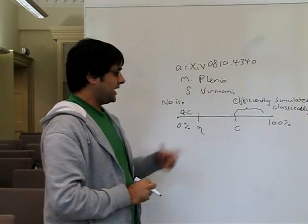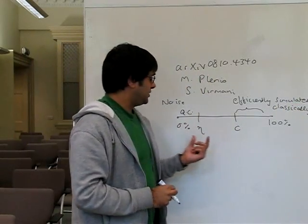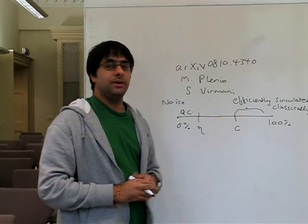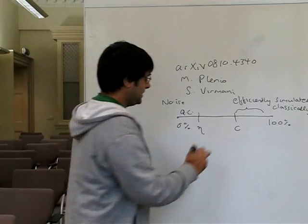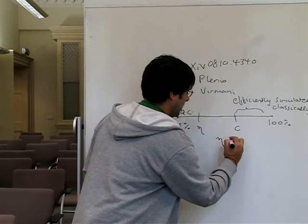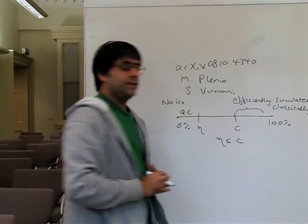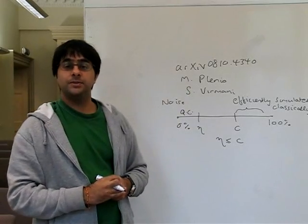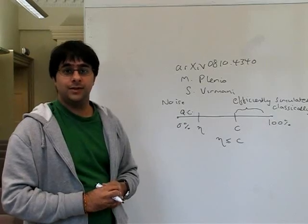The idea would be that if you could figure out the value C such that noise is so high that you can be efficiently simulated classically, then that would be an upper bound for the quantum threshold, provided that quantum computers are truly better than classical computers, which is something that we assume.